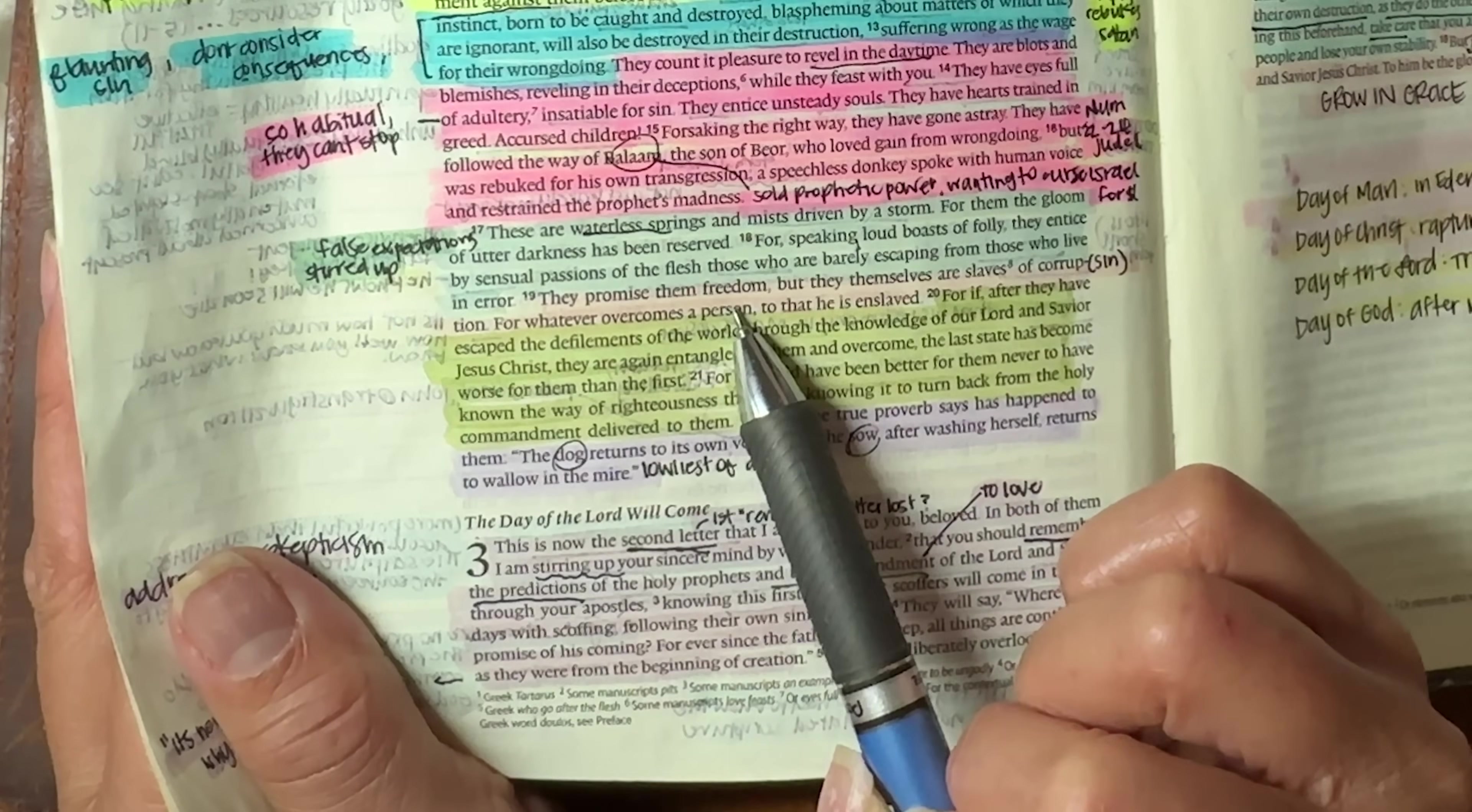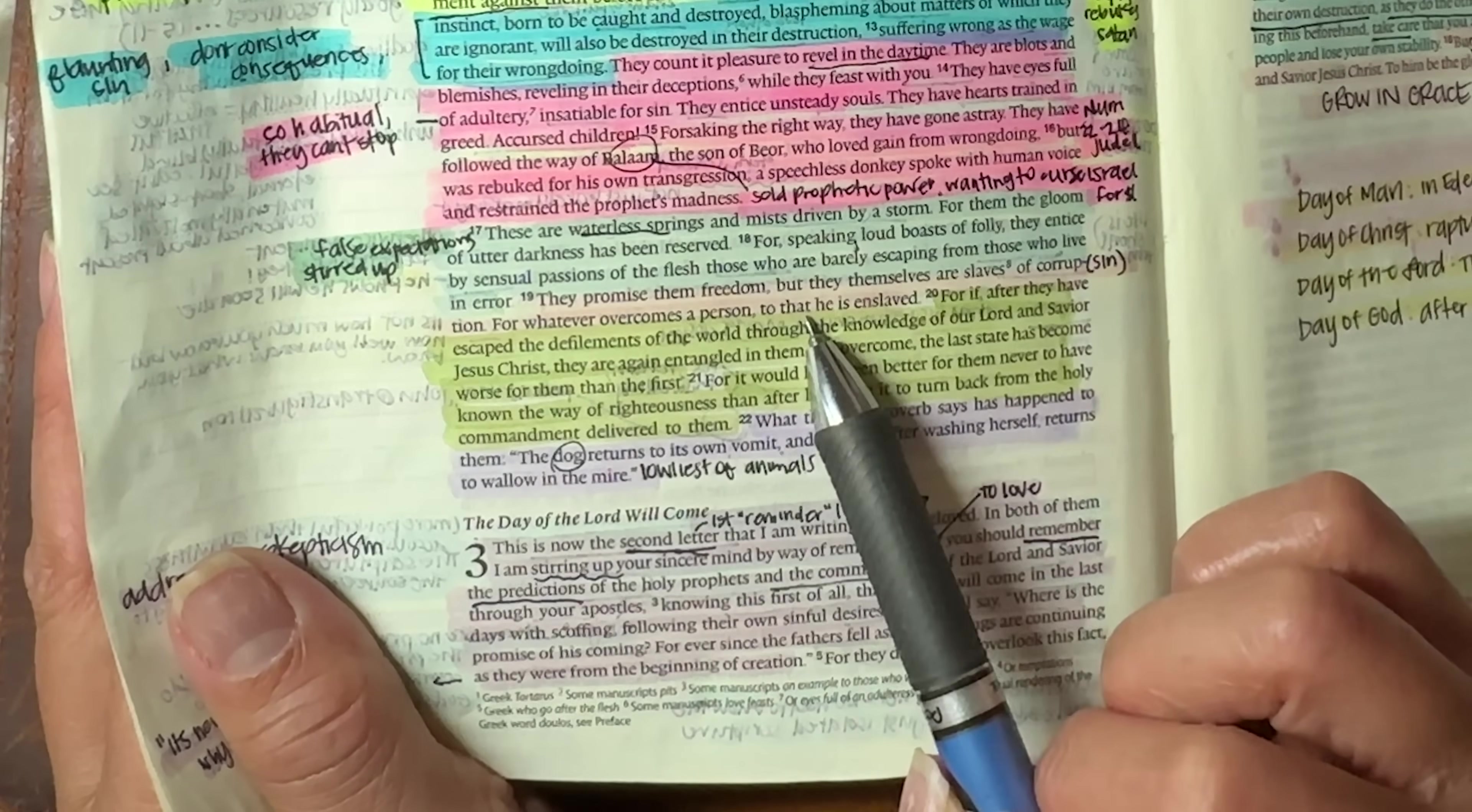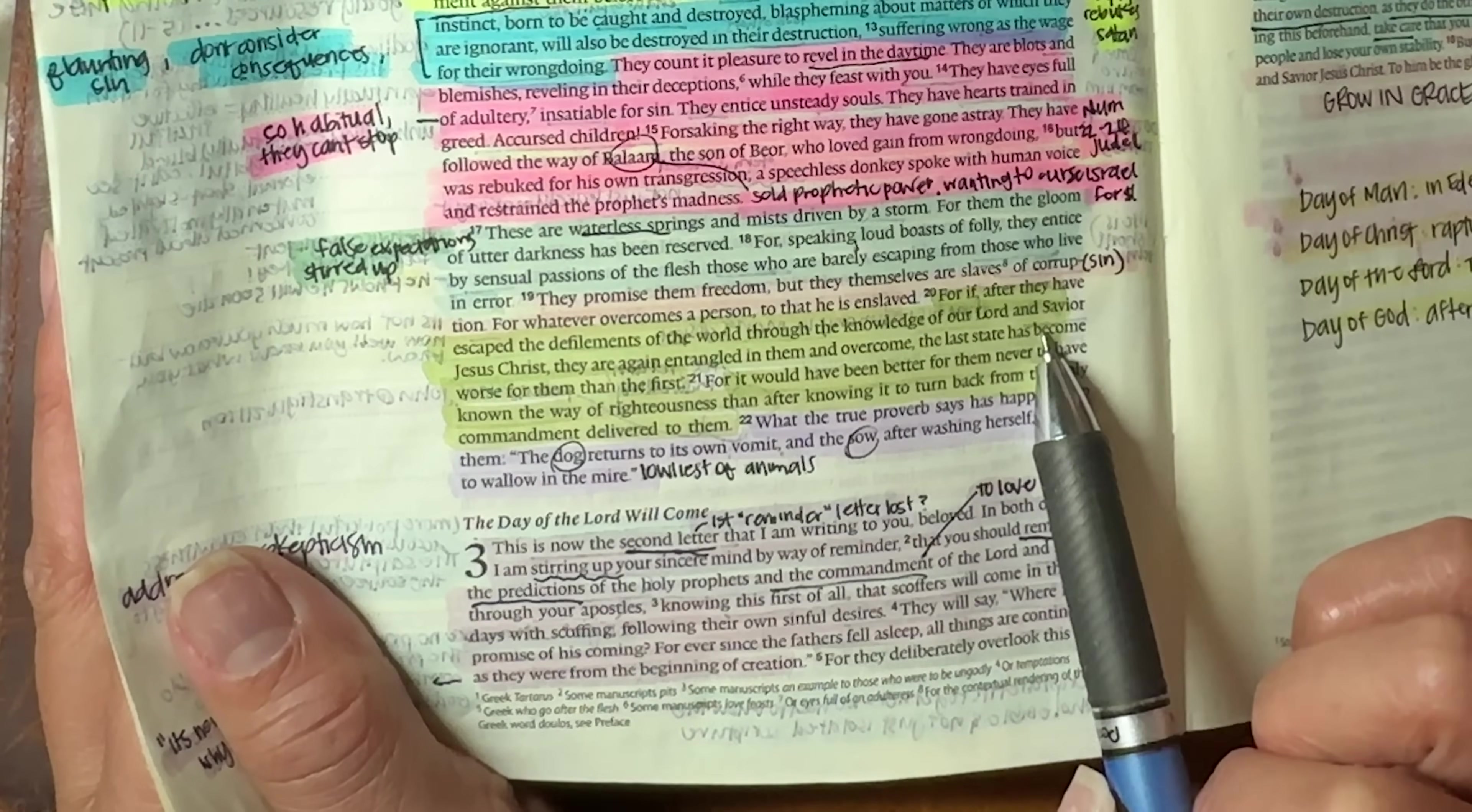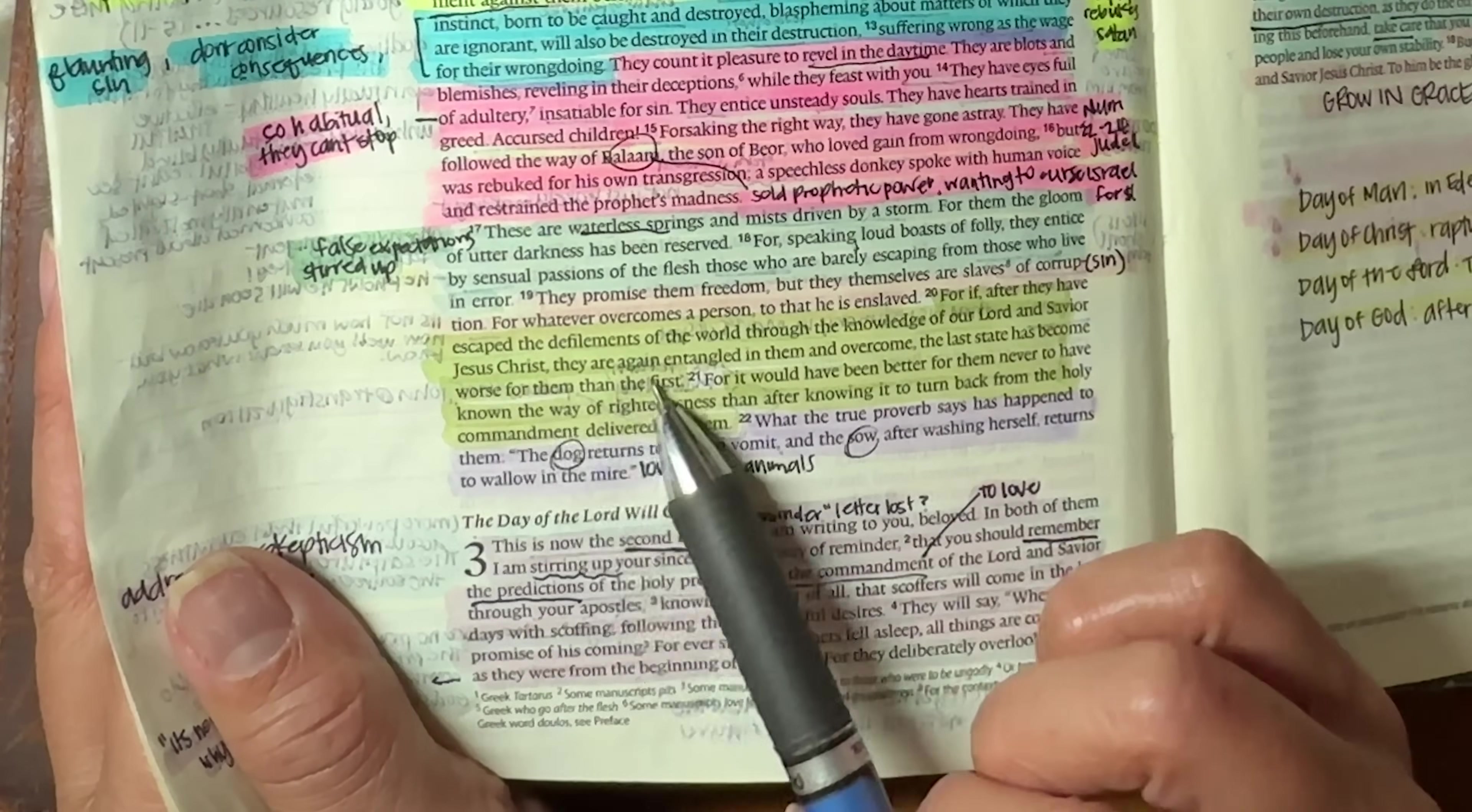They promise them freedom, but they themselves are slaves of their own corruption or sin. For whatever overcomes a person, to that he is enslaved. For if, after they have escaped the defilements of the world through the knowledge of our Lord and Savior, Jesus Christ, they are again entangled in them and overcome. The last state has become worse for them than the first.